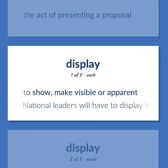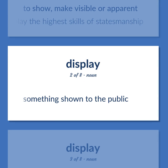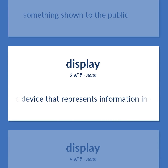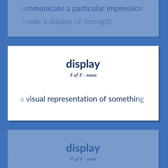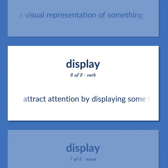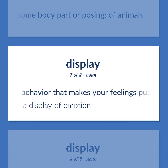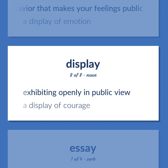To show, make visible or apparent. National leaders will have to display the highest skills of statesmanship. An electronic device that represents information in visual form. Something intended to communicate a particular impression. Made a display of strength. A visual representation of something. Attract attention by displaying some body part or posing — of animals. Behavior that makes your feelings public. A display of emotion. Exhibiting openly in public view. A display of courage.